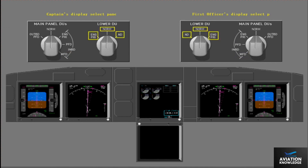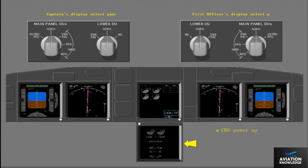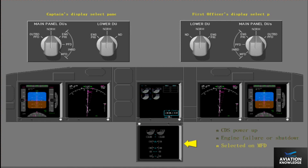The lower DU selector has normal, engine primary, and navigation display or ND positions. Normally, all selectors are in the normal position. In normal, the pilot's outboard and inboard display units show primary flight and navigation data, and the upper display unit shows primary engine and fuel data. The lower display is normally blank, or shows secondary engine instruments when the CDS initially receives power, engine failure or shutdown in flight, when selected on the multi-function display or MFD, or when secondary engine limits are exceeded.